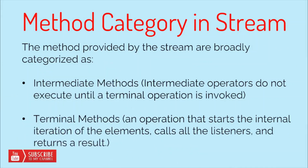Now let's see the different types of methods available in Stream. As discussed in the previous video, there are two categories: intermediate methods and terminal methods. Intermediate operators do not execute until a terminal operation is invoked. Terminal methods start the internal iteration of elements, call all the listeners, and return a result — after which no further processing on the stream is possible. Examples of intermediate methods are dot map and dot filter; terminal method examples are dot collect and dot forEach.